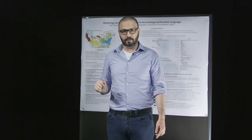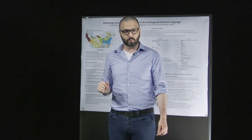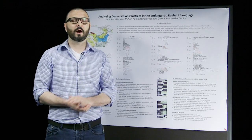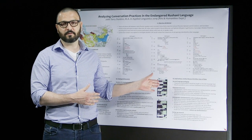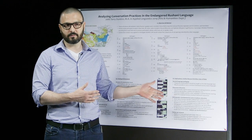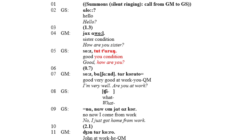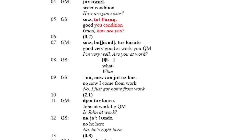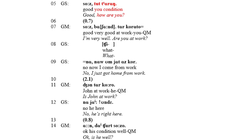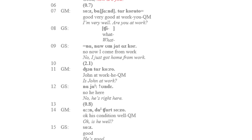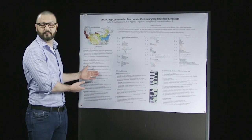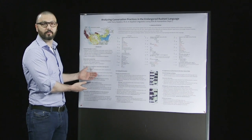It is an unwritten language with about 20,000 speakers. My wife is actually a native speaker of this language. I could listen to phone calls between native speakers of Rushani, and I looked for the same sequences of calls that have been identified in other languages.